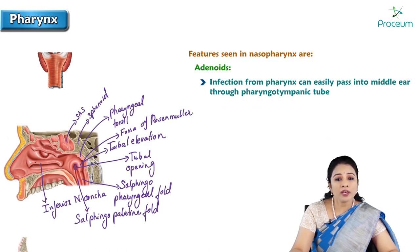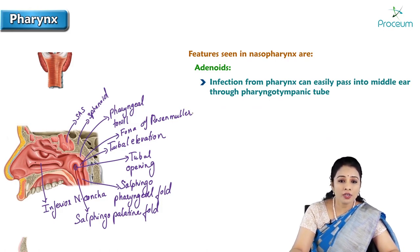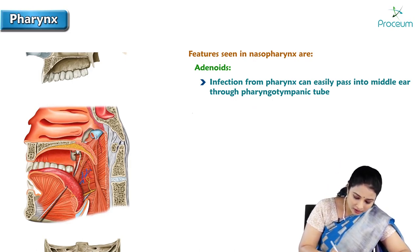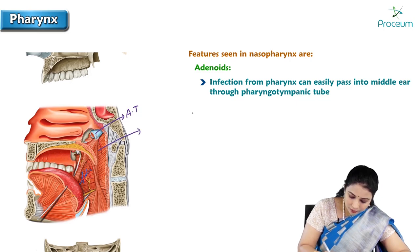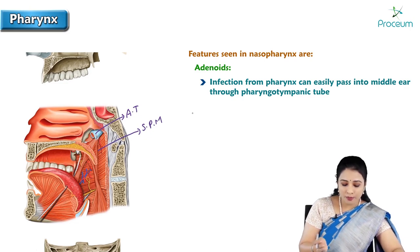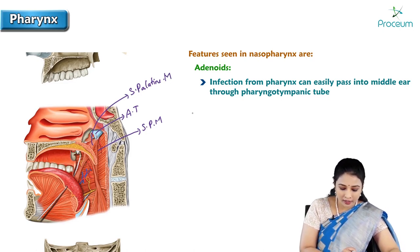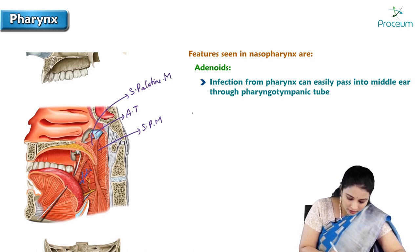Infection from the pharynx can easily pass into the middle ear through the pharyngotympanic or auditory tube. Here is the image where the mucosa of the nasopharynx is removed exposing the deeper structures including the auditory tube. We can see the salpingopharyngeal muscle which makes the salpingopharyngeal fold. This is the salpingopalatine muscle containing the levator veli palatini muscle, and here is the soft palate.